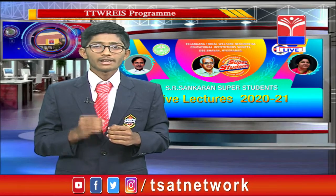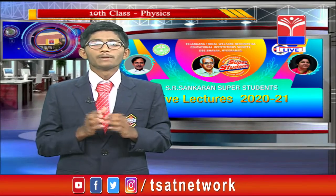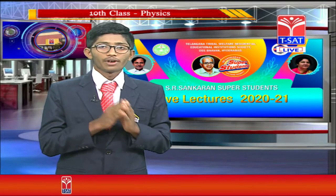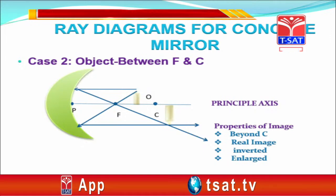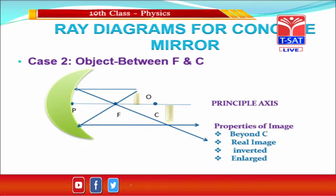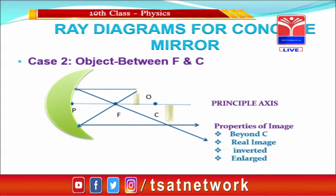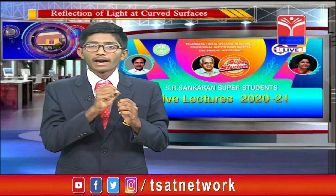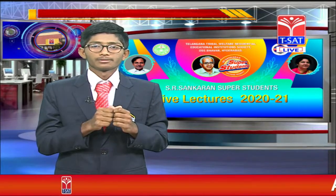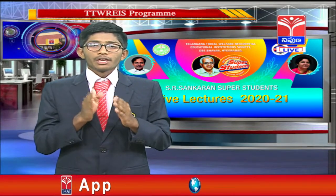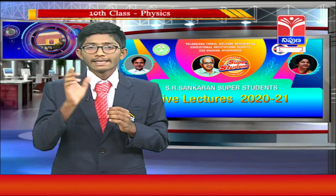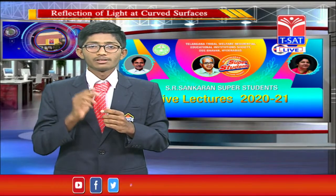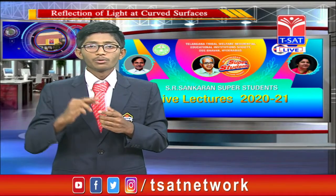Let's consider another case where the object is placed between F and C. The first ray moves parallel to the principal axis and passes through the focal point. The next ray moves through the focal point and travels parallel to the principal axis. In this case, the image is formed beyond the center of curvature. It is a real image and an inverted image.